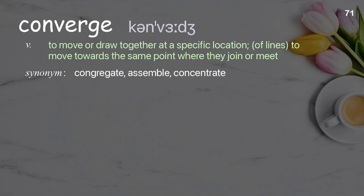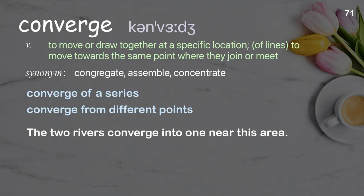Converge: to move or draw together at a specific location; of lines, to move towards the same point where they join or meet. Examples: converge of a series; converge from different points; the two rivers converge into one near this area.